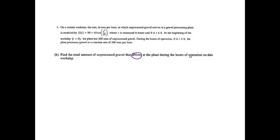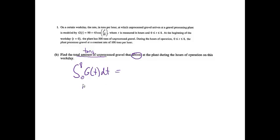Part B: Find the total amount of unprocessed gravel that arrives at the plant during the hours of operation on this workday. If I want the total amount in tons, and G is tons per hour, I know I'm going to take the integral. So we're going from 0 to 8 of G of t dt — G represents how much gravel is arriving. We'll let Math 9 do the work for us, and we get 825.551 tons. We get one point for having the integral set up and one point for the proper answer.